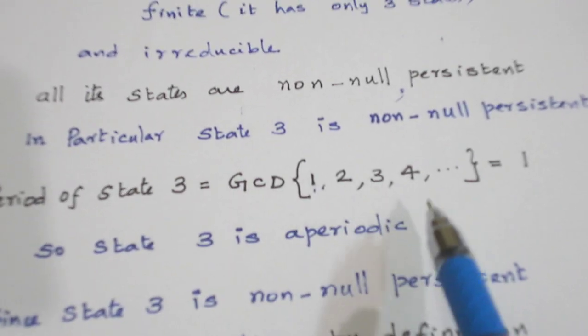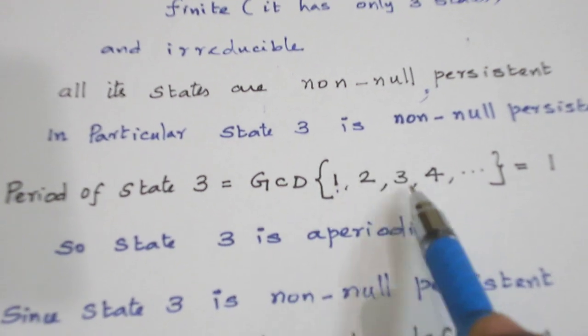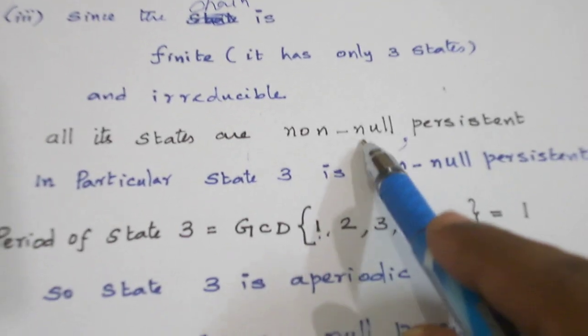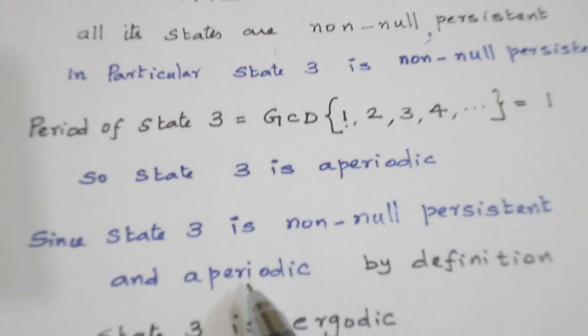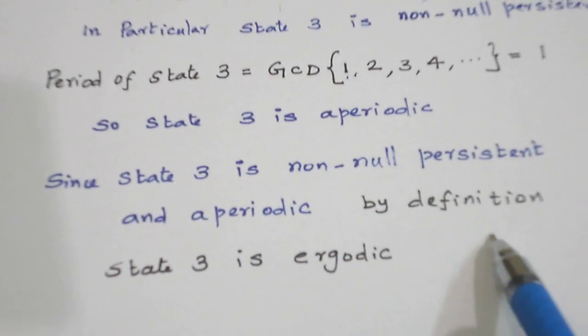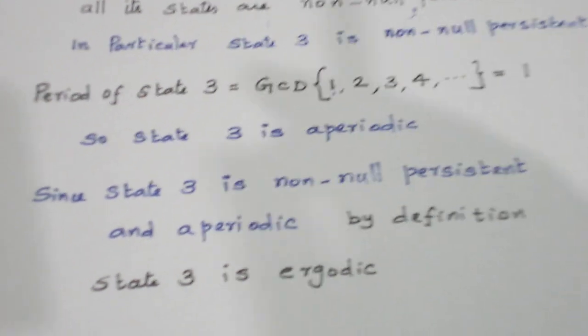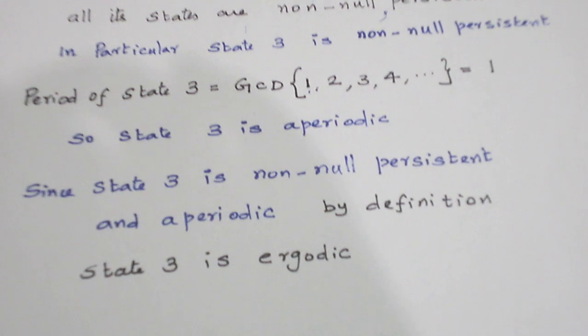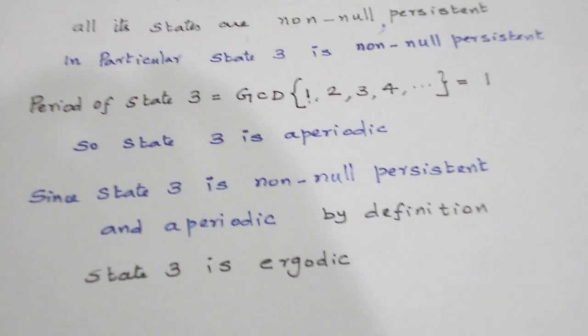Now we can say state 3 is aperiodic since its period is 1. Already it is non-null persistent and it is aperiodic also. So by definition we can conclude state 3 is ergodic. With this the problem is over and let us see another problem in the next video. Thank you.